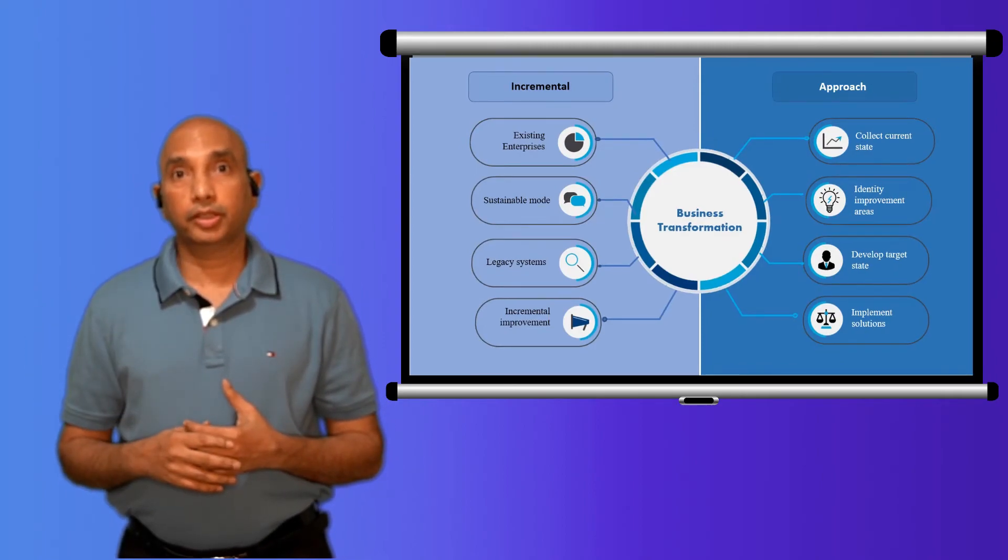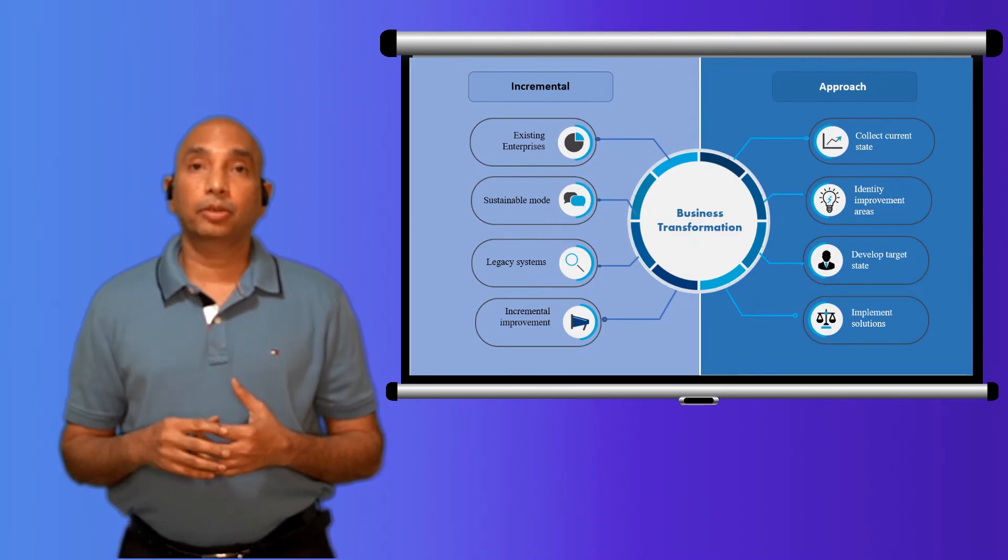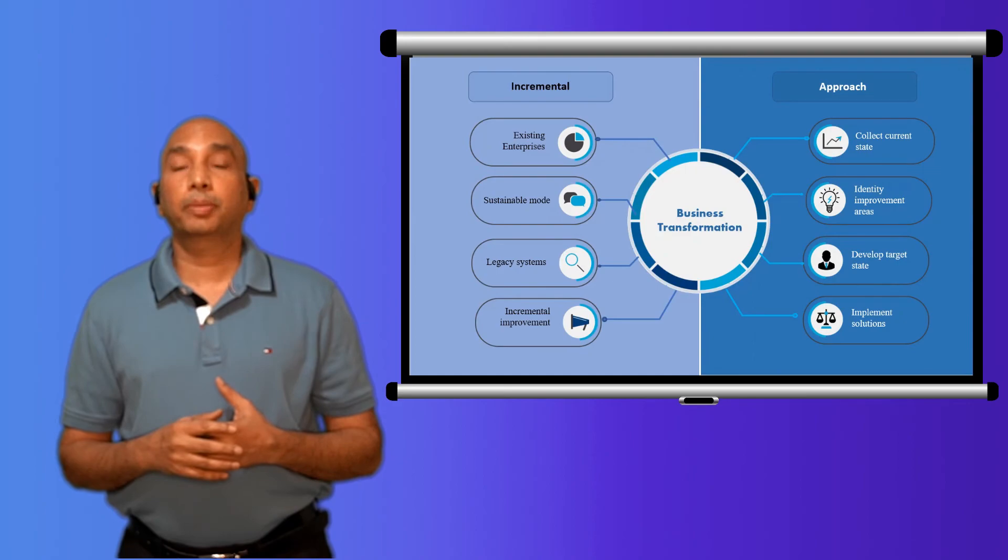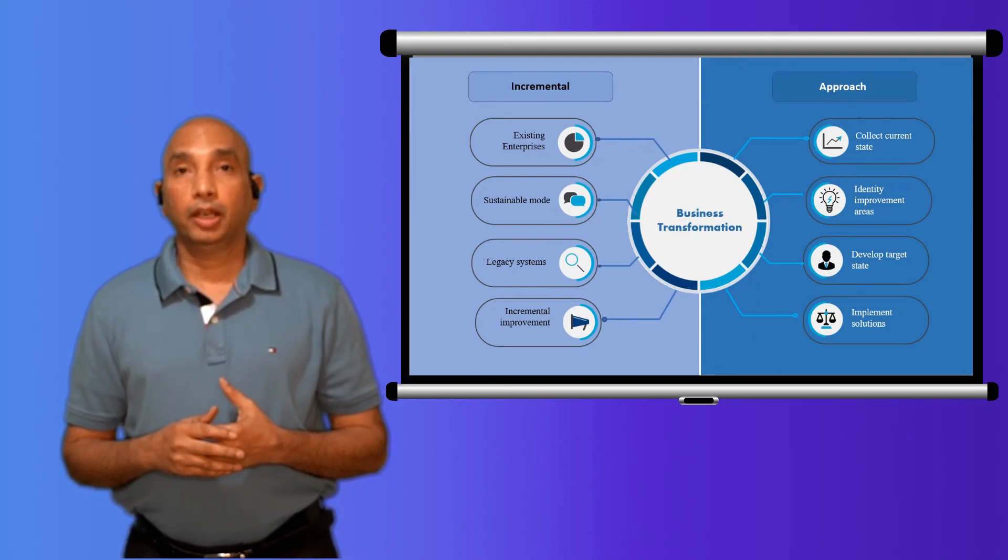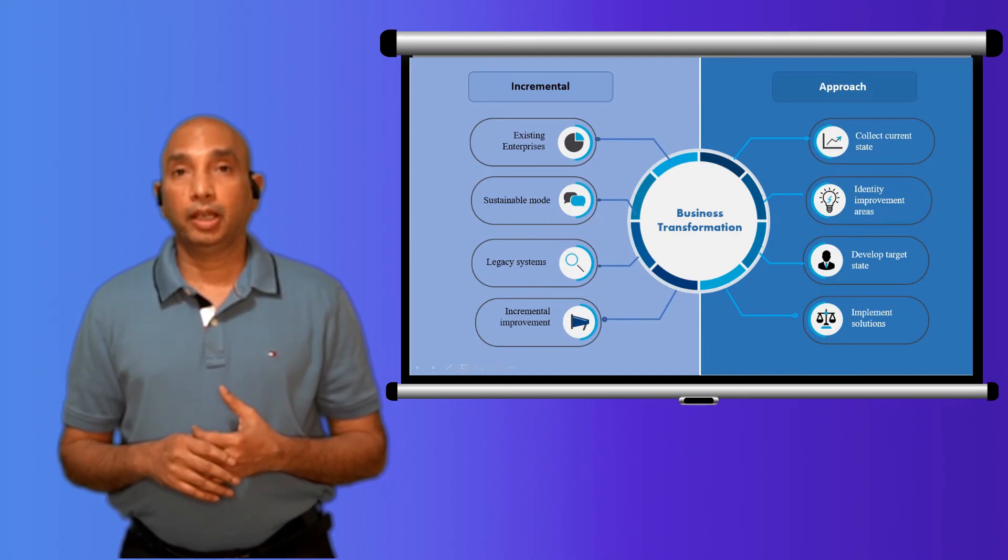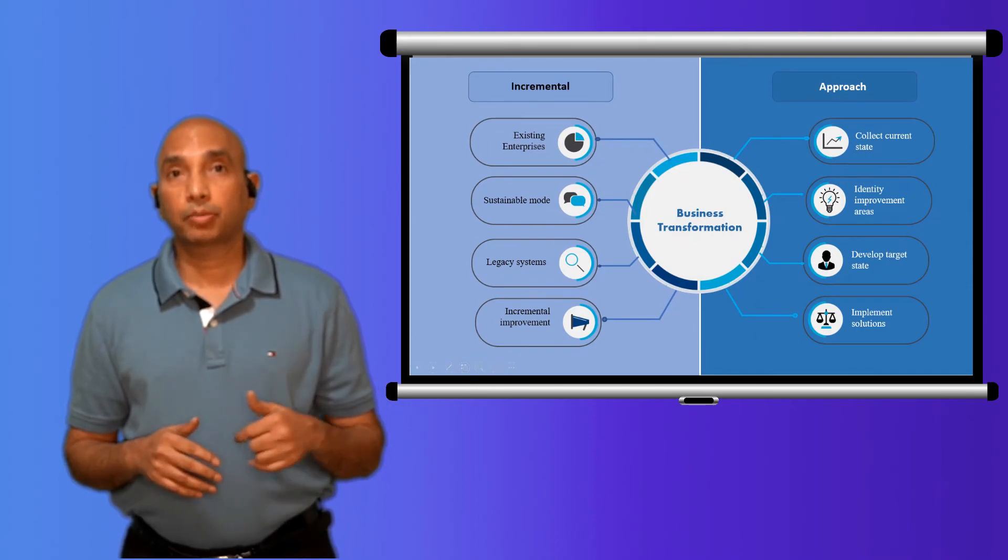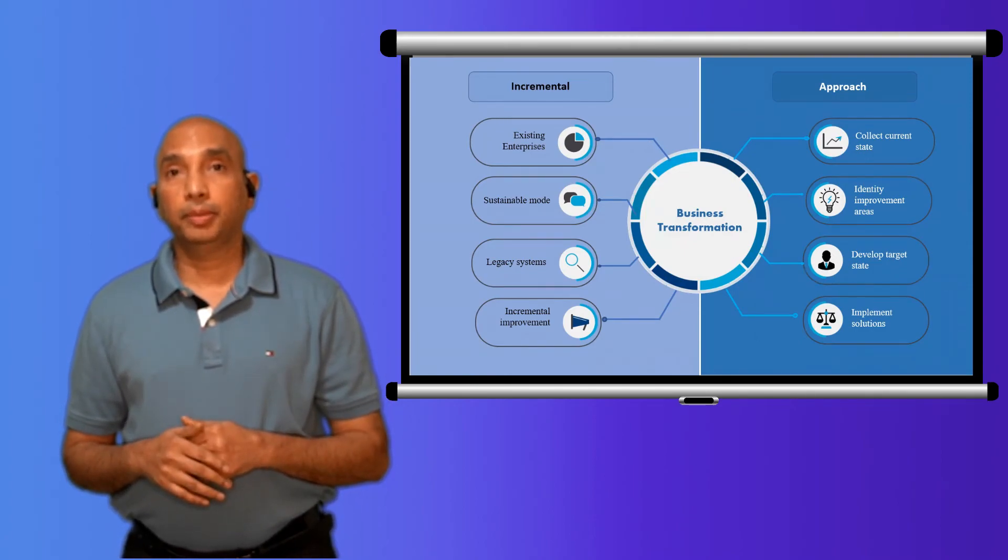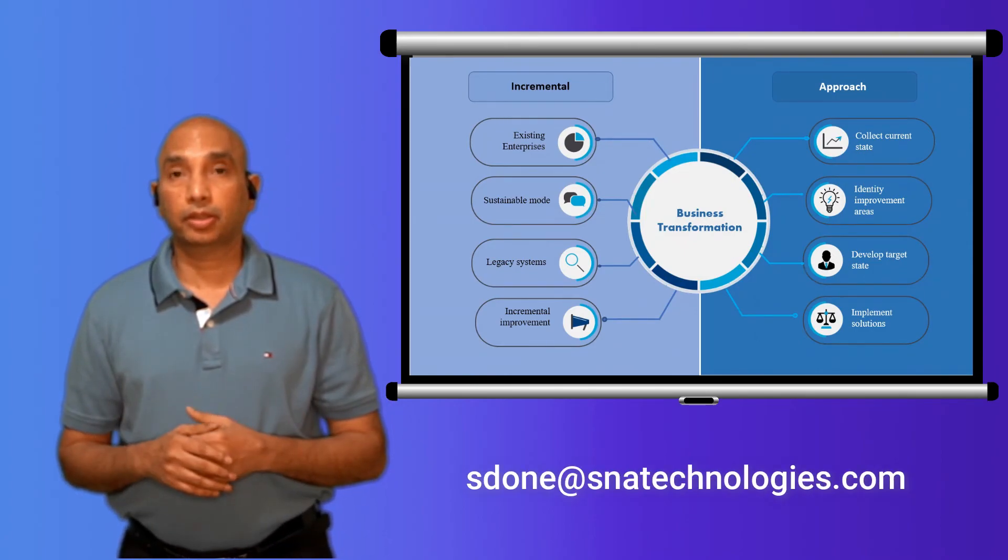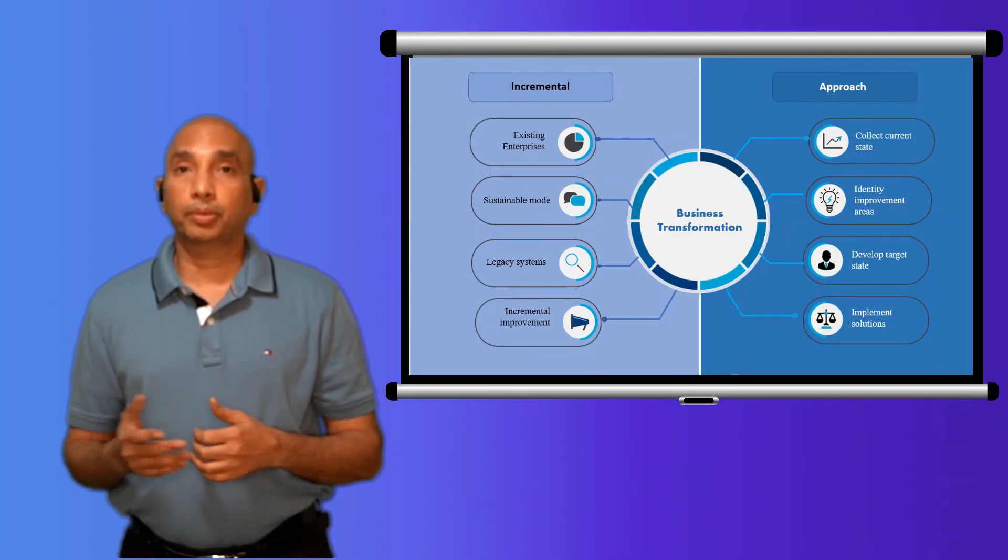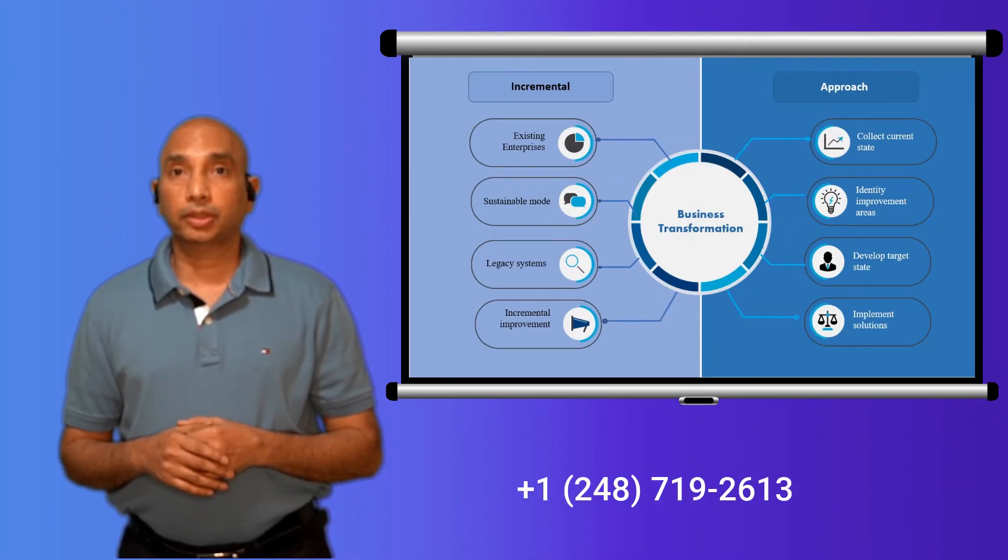If you're such an organization who got stuck in collecting the current state and who don't know what incremental improvements you have to make, feel free to reach me. My contact info is at the bottom. My email ID is s10@snatechnologies.com, and my phone number is 248-719-2613.